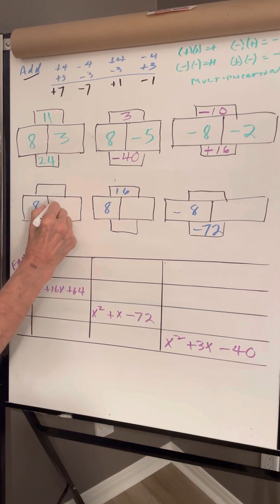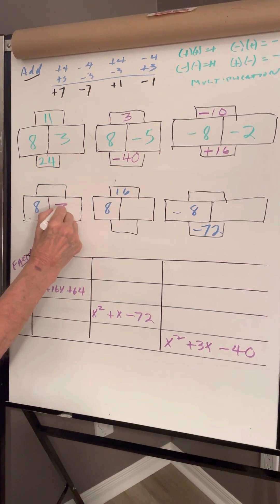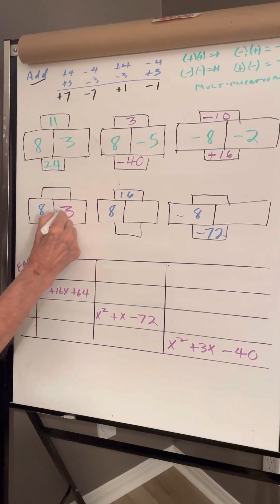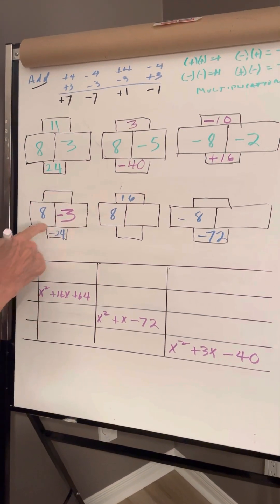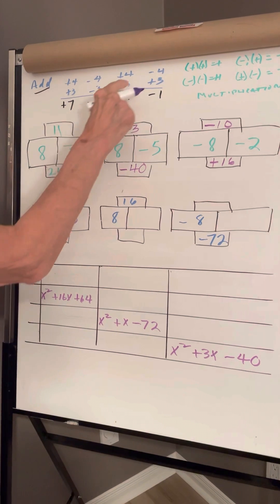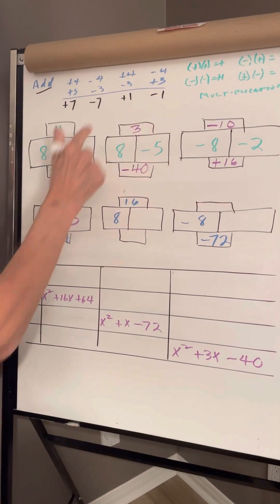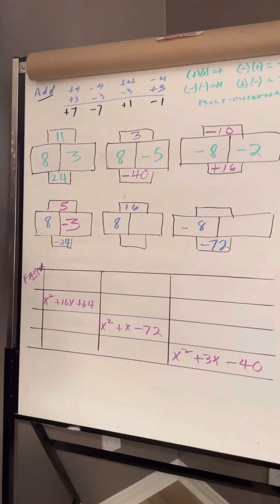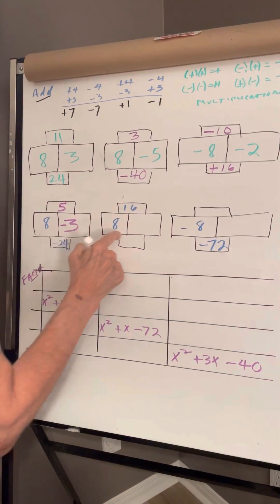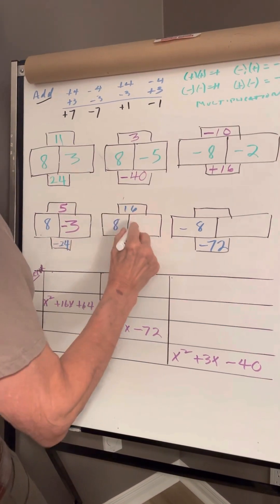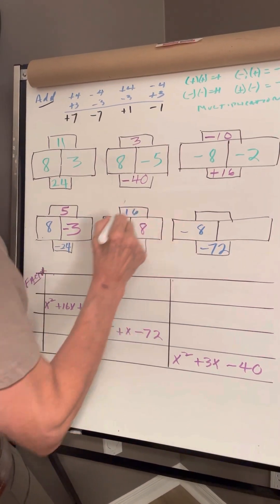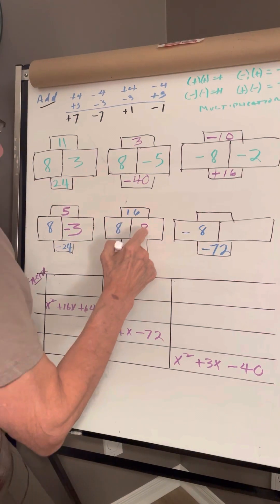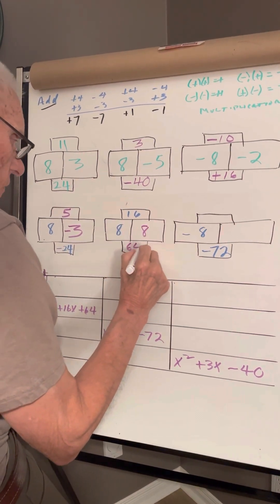Multiplication. 8 times 3 is 24. C1 negative, keep it. The signs are different. Take the difference. 5. 8 — this is addition — plus 8 is 16, and 8 times 8 is 64.